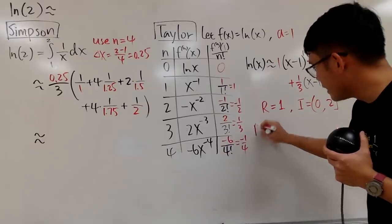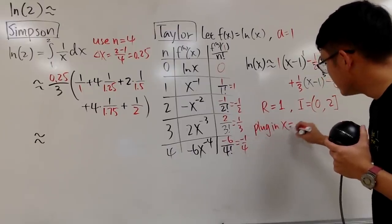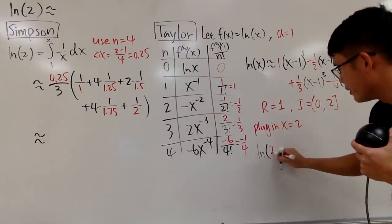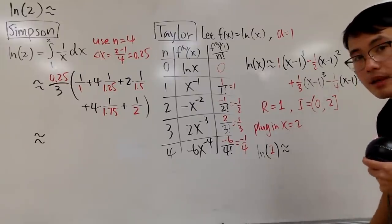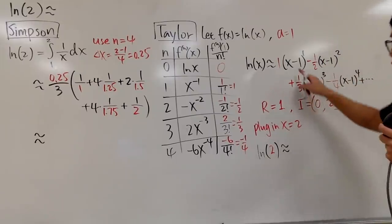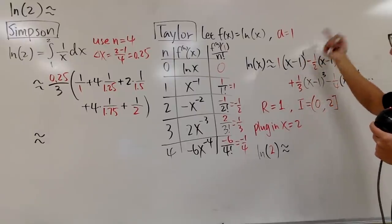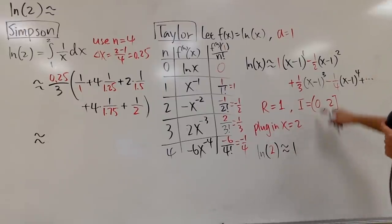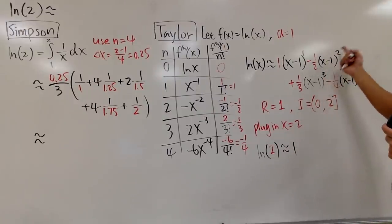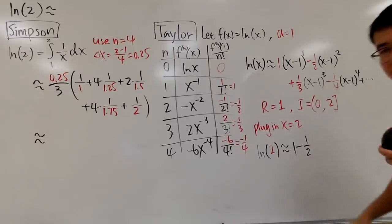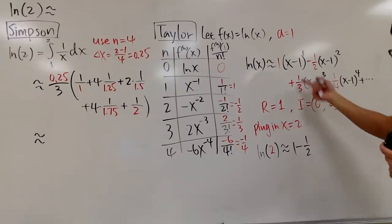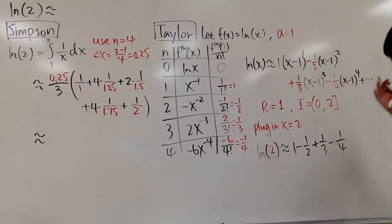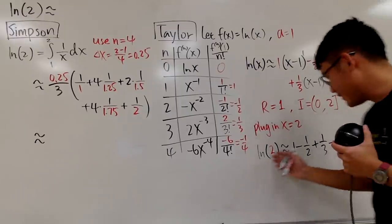Since x=2 is inside the interval of convergence, we can legitimately plug in x=2. Each (x-1) becomes (2-1)=1, raised to whatever power, so all those factors are just 1. The Taylor approximation gives: ln(2) ≈ 1 - 1/2 + 1/3 - 1/4. These are the first four non-zero terms.